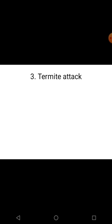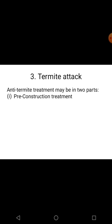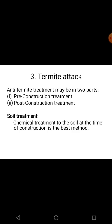The third type of defect is termite attack. Termites are insects that enter your construction and damage the structure. Treatment is done in two parts: pre-construction treatment and post-construction treatment. In pre-construction, soil treatment is given — chemicals like Aldrin, Heptachlor, and Chlordane are added to water and applied to the soil during compaction to prevent termite attack.